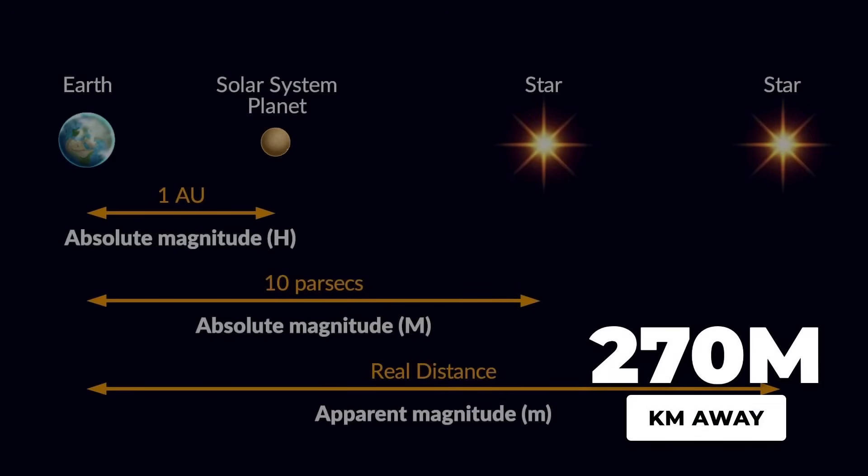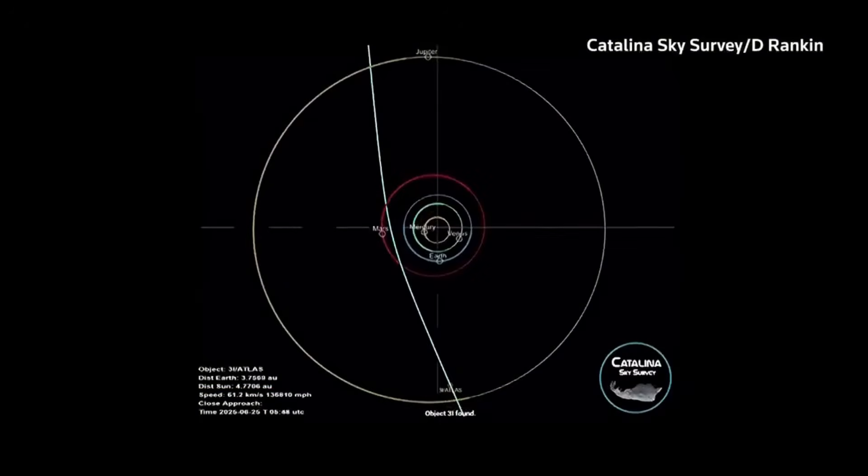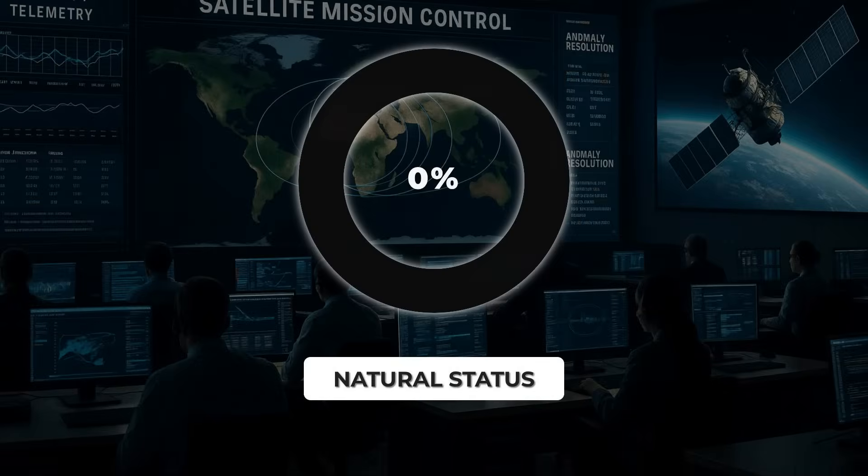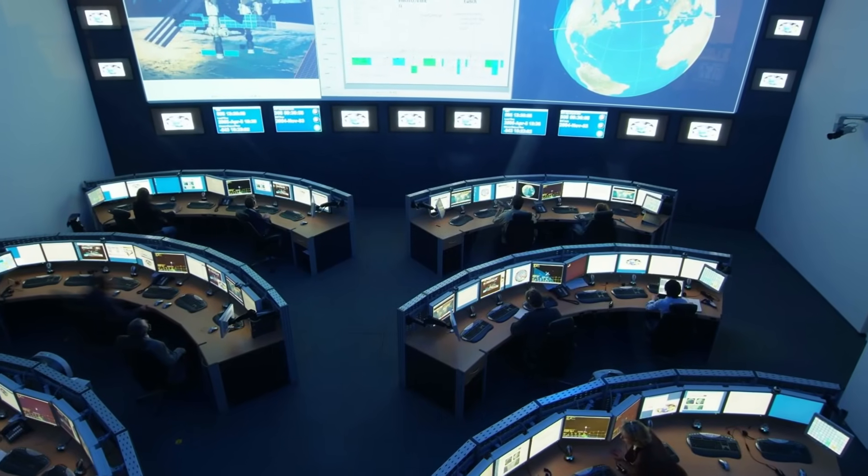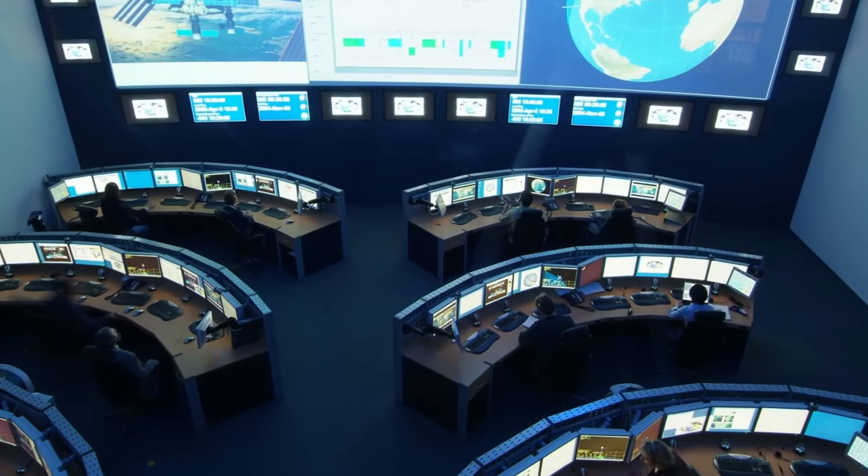Ephemeris projections show it should emerge into view at about 1.8 astronomical units from Earth, roughly 270 million kilometers out. This reappearance is more than routine. If 3i-Atlas is found where orbital models predict, confidence in its natural status grows. But even a small deviation could set off urgent reviews by planetary defense teams.